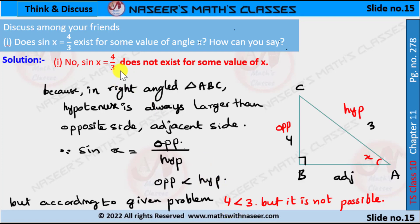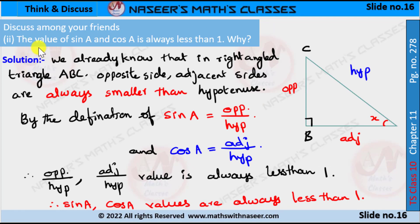Now second one: the value of sin A and cos A is always less than 1. Why? We already know that in right angle triangle ABC, opposite side and adjacent sides are always less than the hypotenuse, that is, smaller than the hypotenuse.